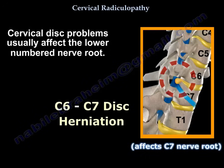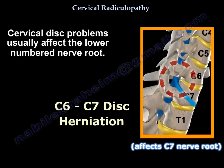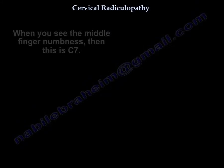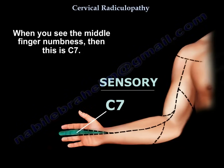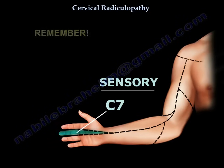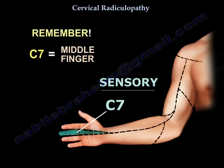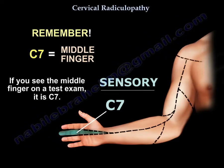Cervical disc problems usually affect the lower numbered nerve root. For example, C6-C7 herniation will affect the C7 nerve root. When you see middle finger numbness, it is C7. Just remember: C7 is the middle finger. If you see the middle finger on a test exam, it is C7.